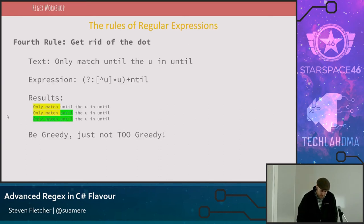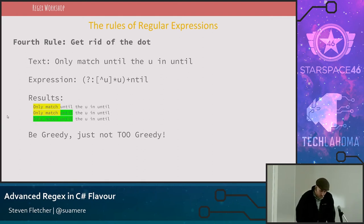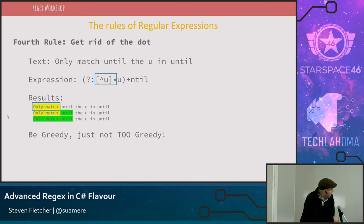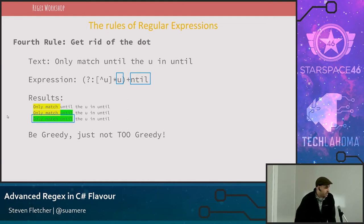Going back to rule four: get rid of the dot. The dot is evil. The problem isn't the laziness or greediness, but you do want to be selectively greedy. Get rid of the dot and instead have the pattern: find everything that's not a 'u' multiple times, greedy — no question mark after that asterisk. It will find everything that's not a 'u' in one greedy jump, then look for a lowercase u. Be greedy, but don't use a dot. This is more efficient even in a large document — just jumping from non-u to non-u greedily. Not using a dot is the key. The dot is evil.